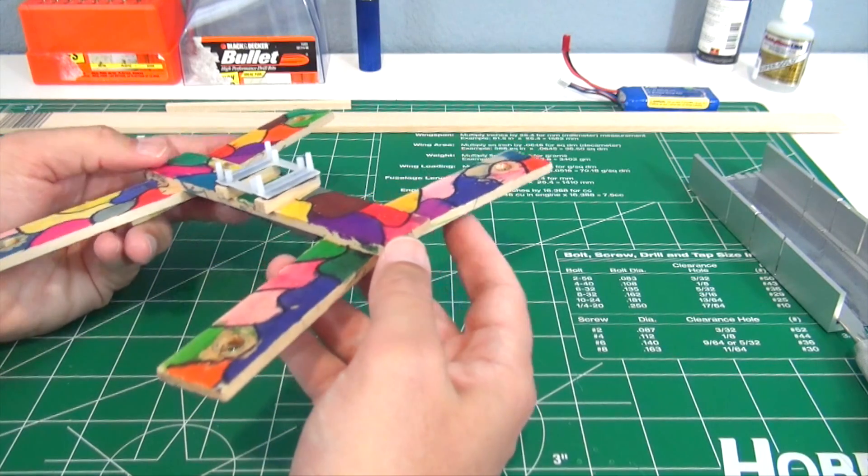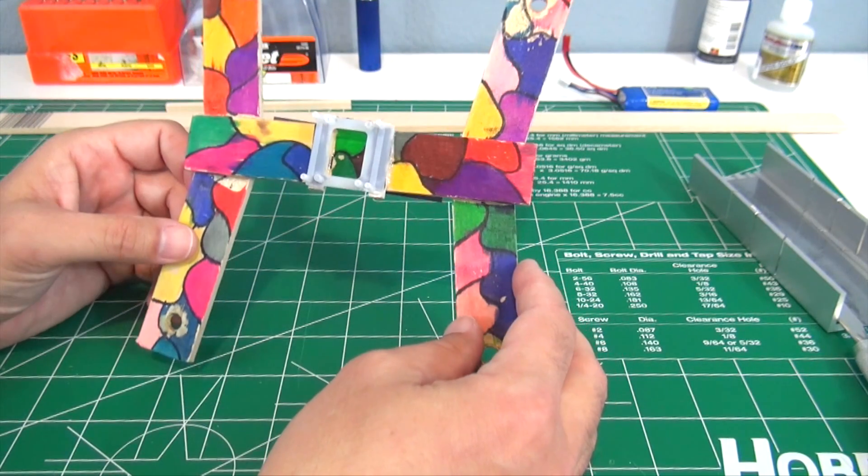And by the way, you don't have to paint it all these funky colors. This was done by my daughter, she trimmed it out. You could just paint the whole thing black or leave it wood or whatever you want, but you don't have to do this obviously. But I like it, it's kind of different.